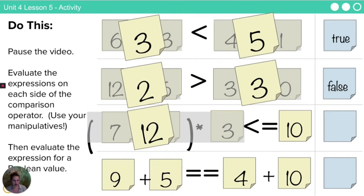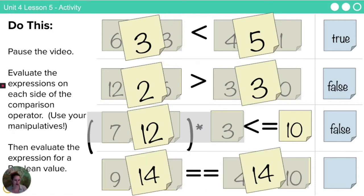When we look at this next one, we get 12 is less than or equal to 10. So we're evaluating everything on the left-hand side and then comparing it to something on the right-hand side. 12 is less than or equal to 10. That is not a true statement. 9 plus 5 is equal to 4 plus 10. 9 plus 5 is 14, 4 plus 10 is 14. 14 is, in fact, equal to 14. So now we have looked through a few expressions. We have figured out how to evaluate both sides and then come up with a Boolean value.